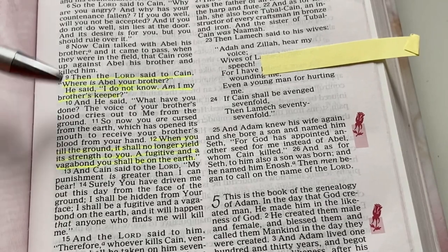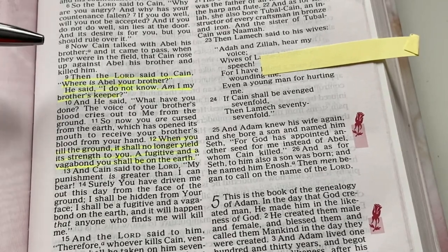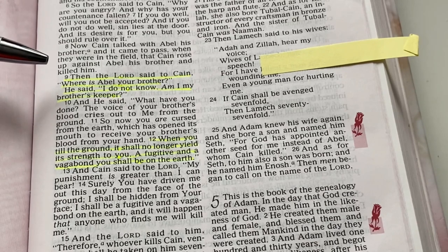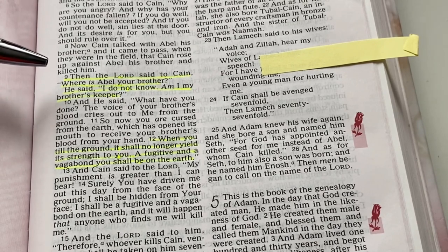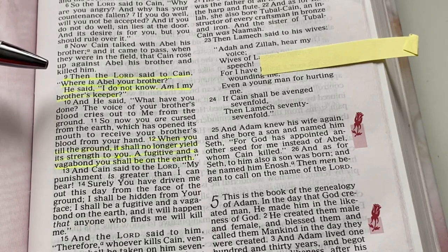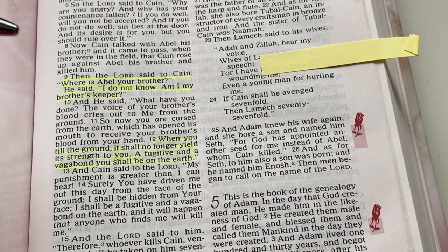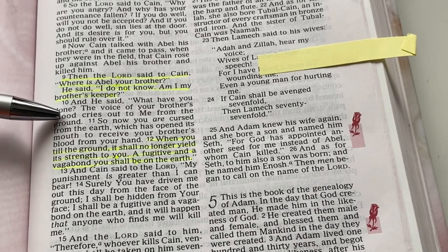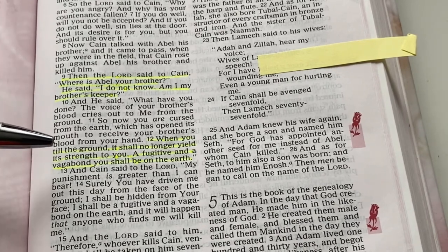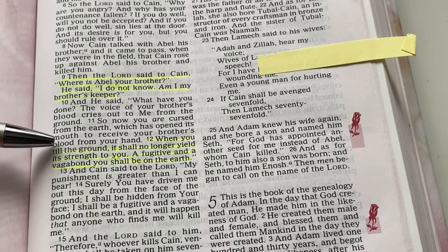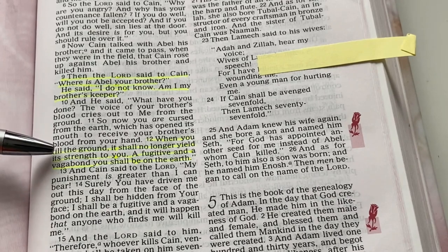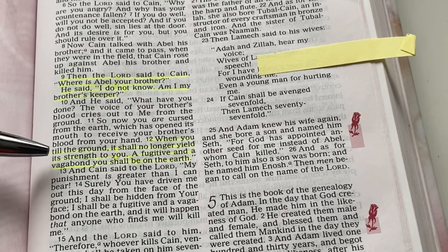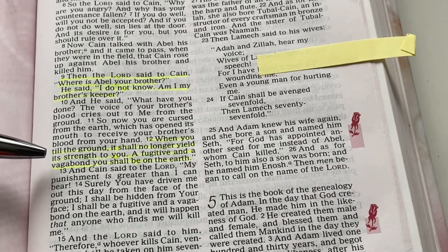Now this particular verse is taken from where Cain killed his brother Abel. Because Abel provided a better sacrifice than Cain did and Cain wasn't happy about it. And he kills his brother Abel. And God said that the blood of his brother was crying out from the ground.